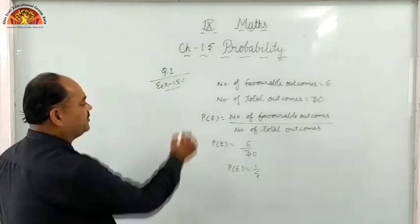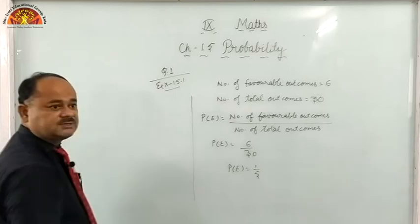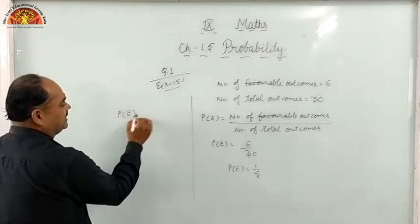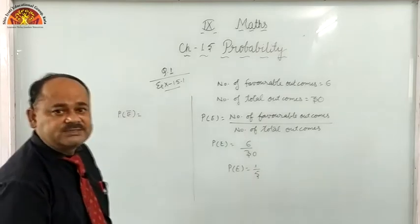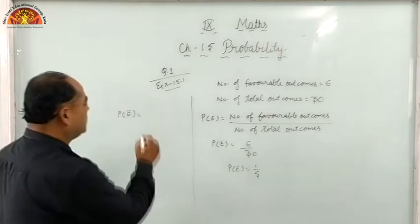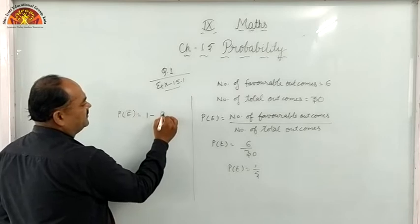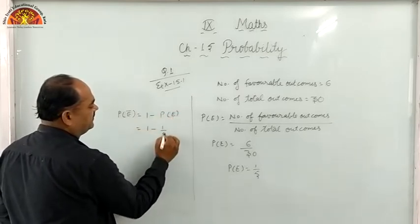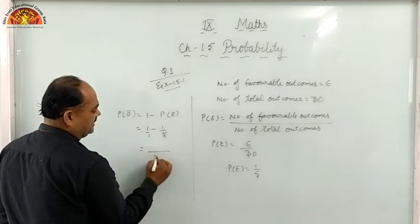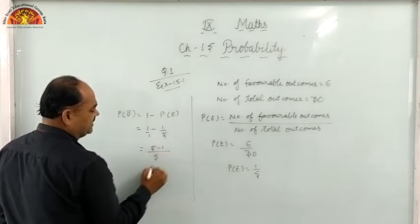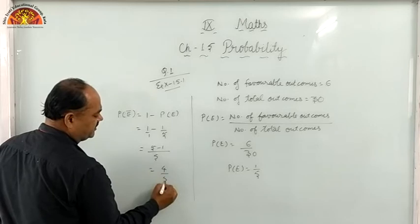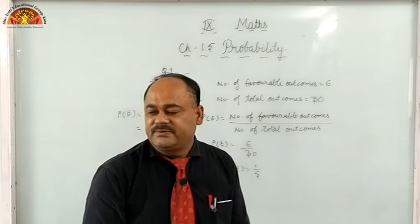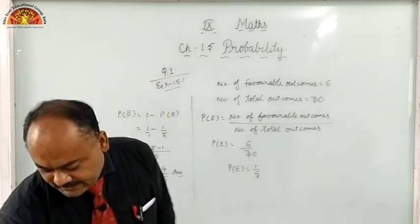Now we also need to find the probability of how many balls she did NOT hit a boundary — that means we need the not event. Not event formula is 1 minus P(E), which is 1 minus 1/5 = 4/5. This is your final answer and it lies between 0 to 1.